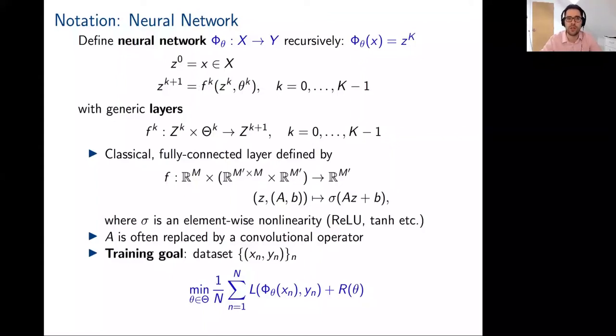This neural network has k layers. Classically, the layers have the following structure: we take the input z and look at the affine combination Az plus b. This affine combination is then inserted into a non-linear function sigma which acts component-wise and is often chosen to be something like the ReLU or hyperbolic tangent. In imaging applications, these matrices A often have a convolutional structure, and for each of the layers usually A and B are the parameters that we learn.